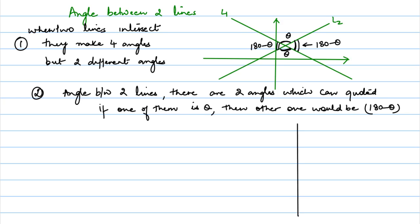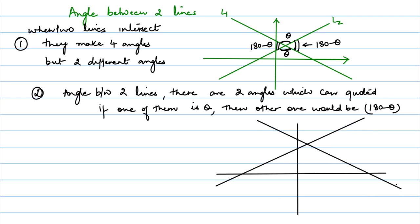Let's draw the situation. These are your two lines — let's say this is line two and this is line one. This is the y-axis and this is the x-axis. We will be given the angle of inclination of both lines. The angle of inclination is the angle which the line makes with the positive direction of the x-axis anticlockwise. Therefore, this line is making an angle theta2 and this line is making an angle theta1. This is the angle we are looking for — the angle between the two lines.